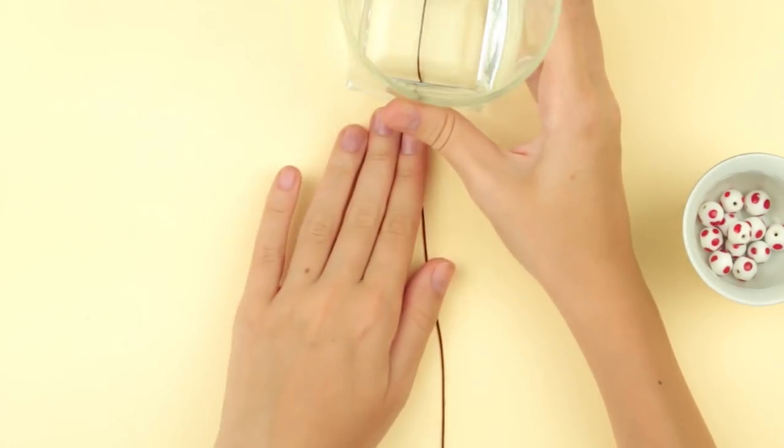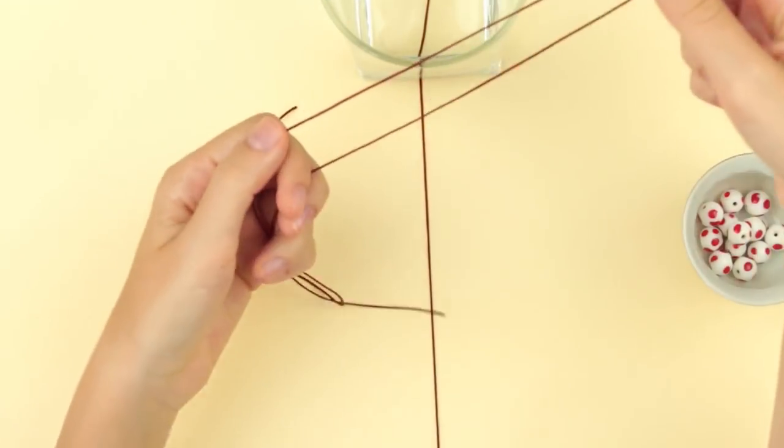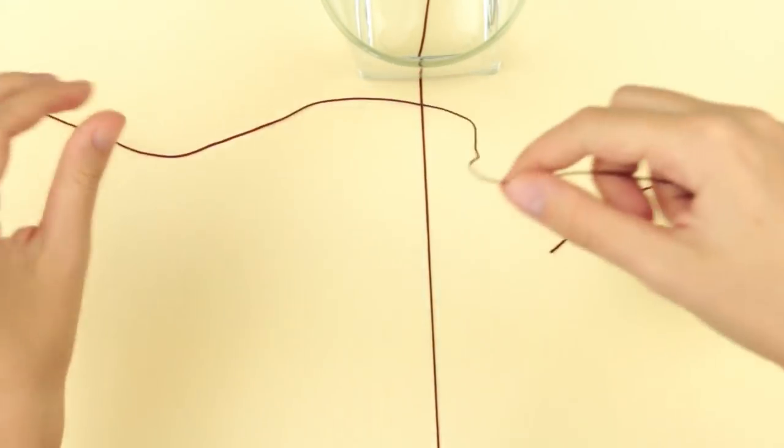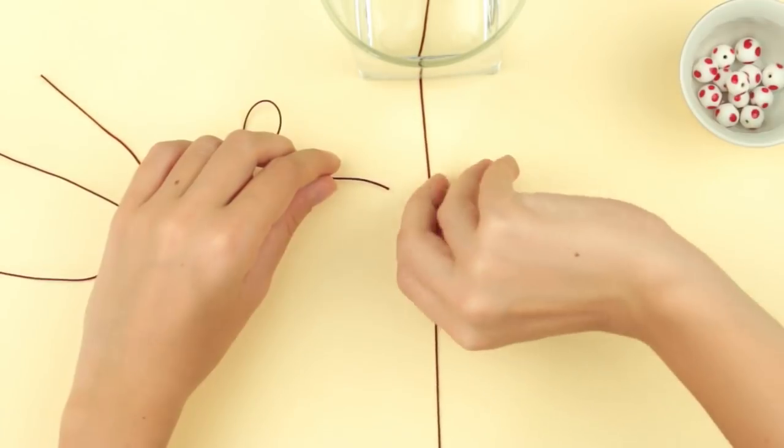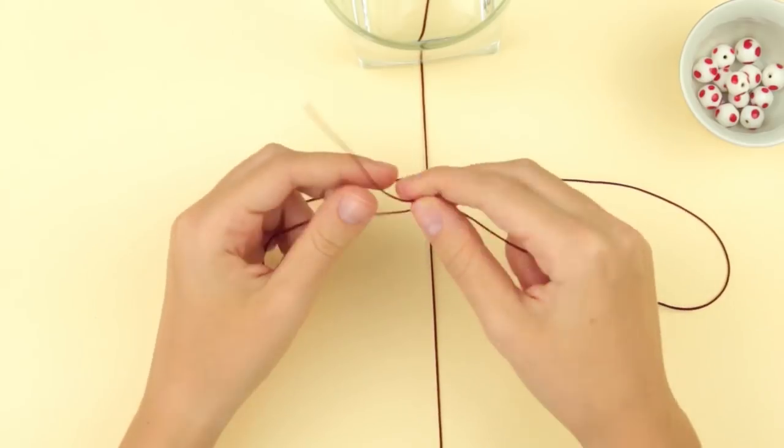Place it on the table. Secure one of the ends to the work surface with something heavy. Now take another cord, a longer one.